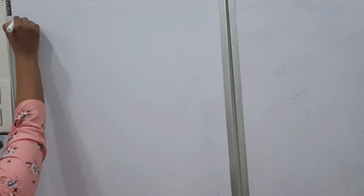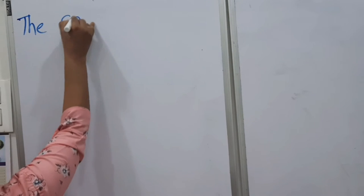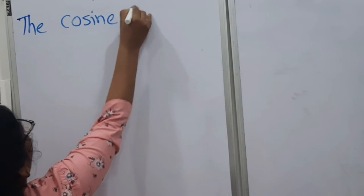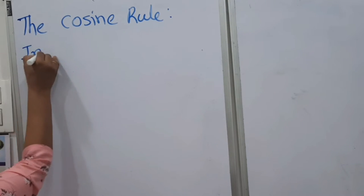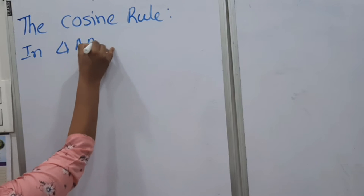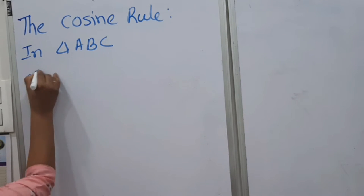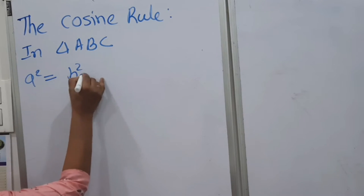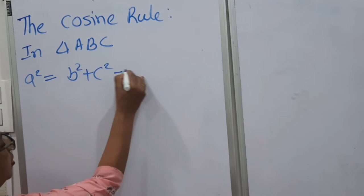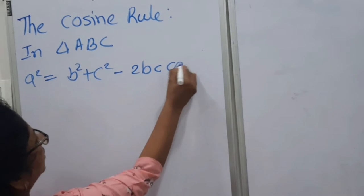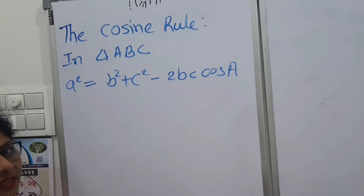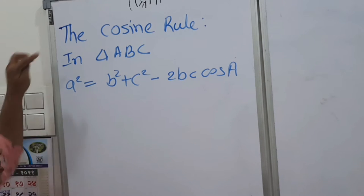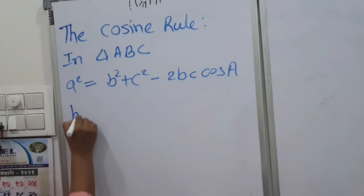First we will see the statement. In triangle ABC, A squared equals B squared plus C squared minus twice BC cos A. This is the first statement. There are three statements for the cosine rule.